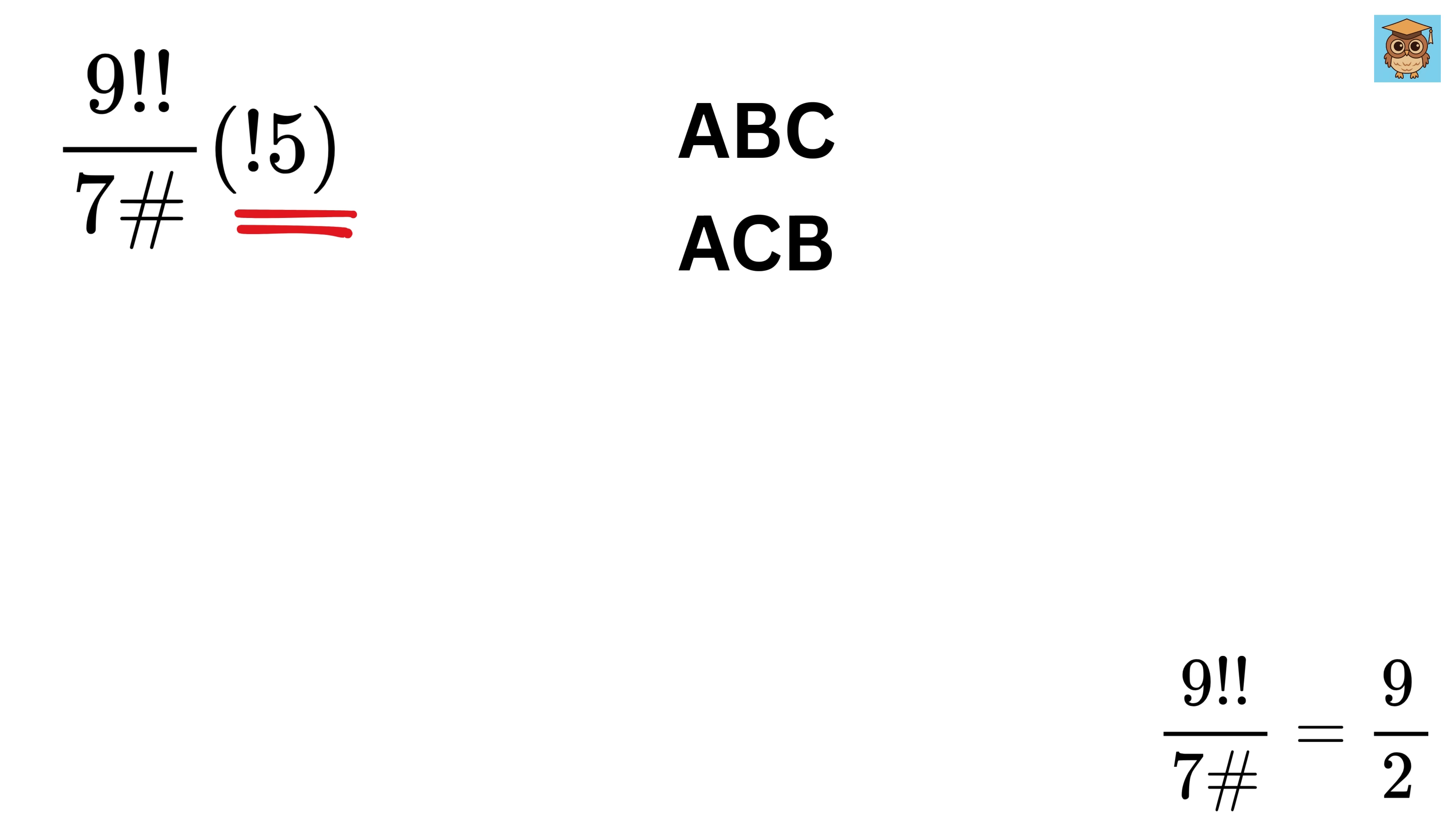Now, let's fix B at the beginning. After that, we can arrange the remaining 2 letters A and C in 2 ways. B, A, and C, and then B, C, and A.